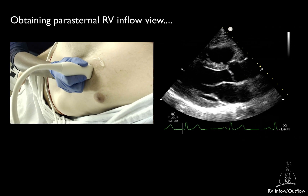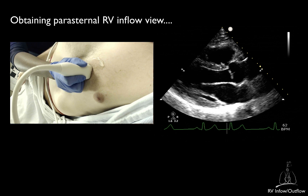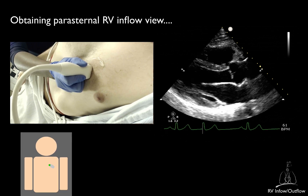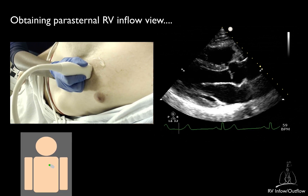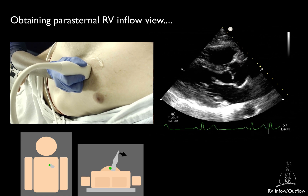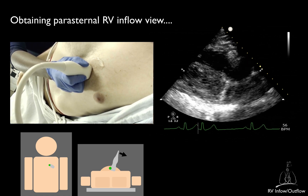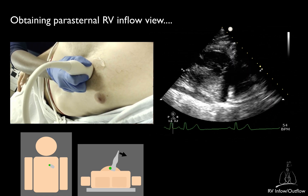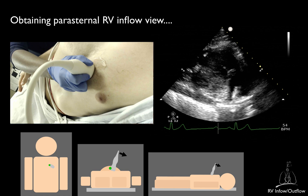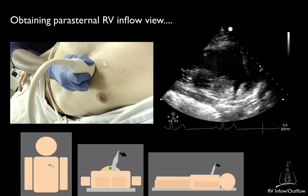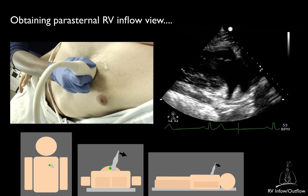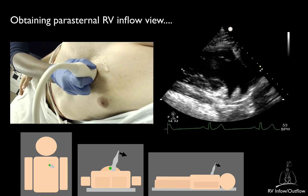To obtain a parasternal right ventricular inflow view, from the parasternal long axis view, tilt the transducer tail toward the left shoulder — that is, direct the ultrasound beam downward and medially. By doing this movement, you will see the tricuspid valve coming into view.